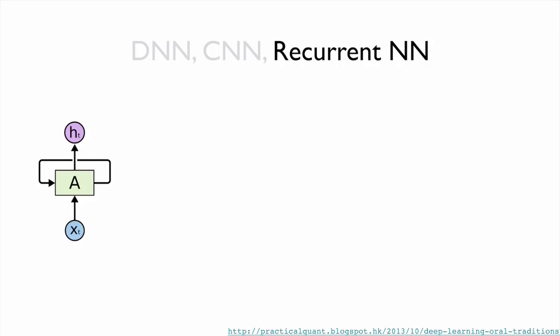RNN, called the recurrent neural network, is very special. It gets an external input and produces output. But at the same time, there is another output — sometimes called hidden states or states — that will be passed through to the next cell.